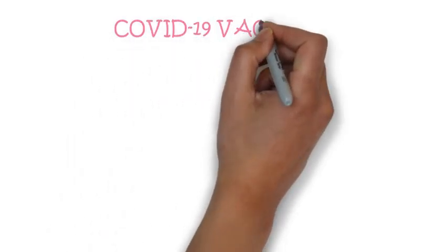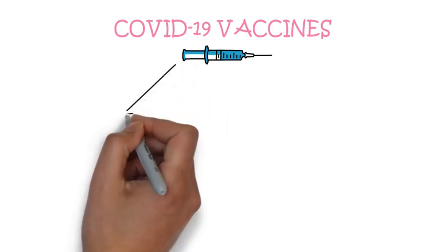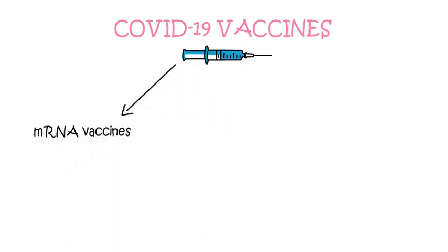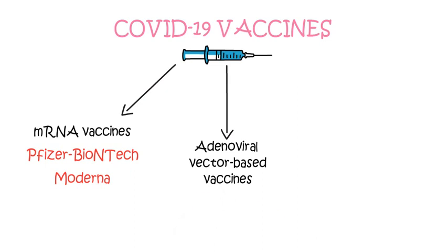Various COVID-19 vaccines are being administered around the world today. Some of these are mRNA vaccines such as the Pfizer-BioNTech vaccine and the Moderna vaccine, some are adenoviral vector-based vaccines such as AstraZeneca's Covishield and Russia's Sputnik V.